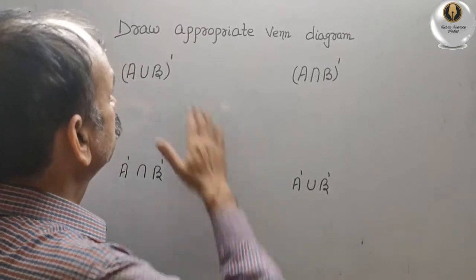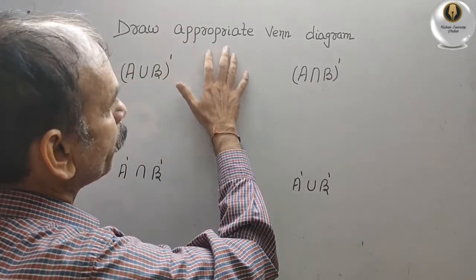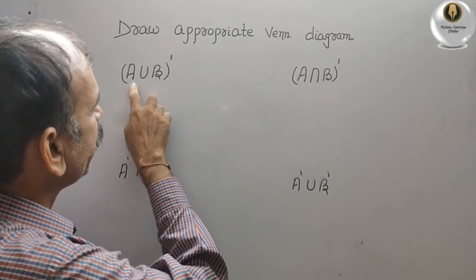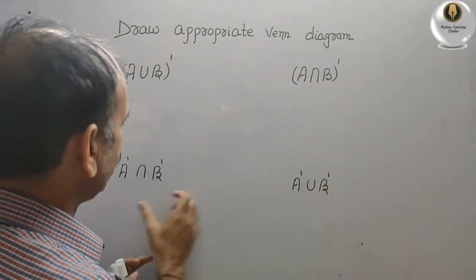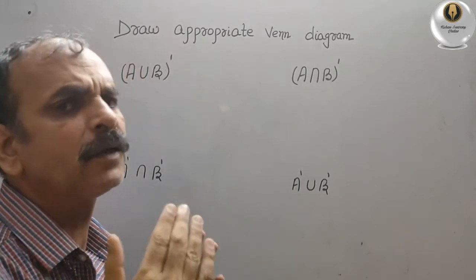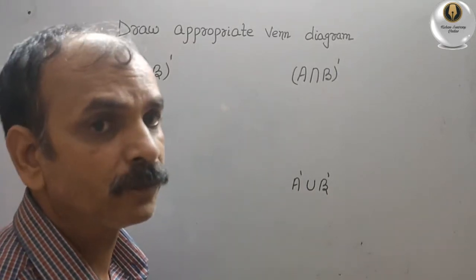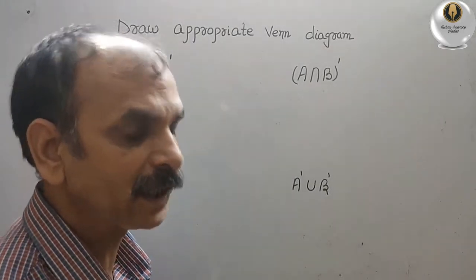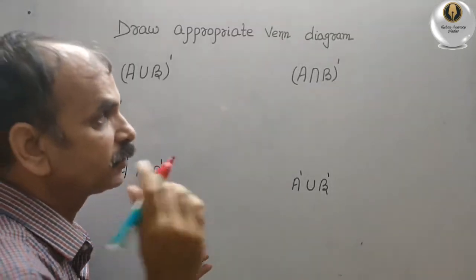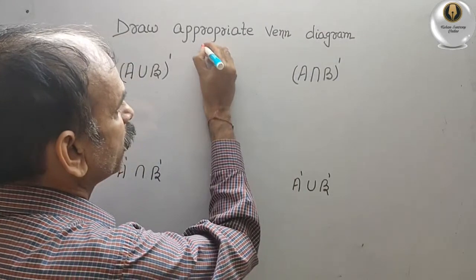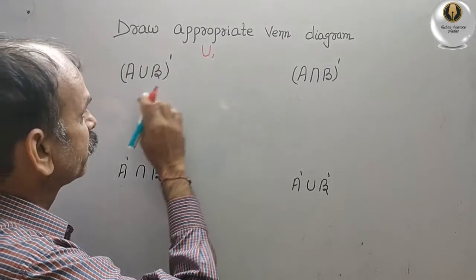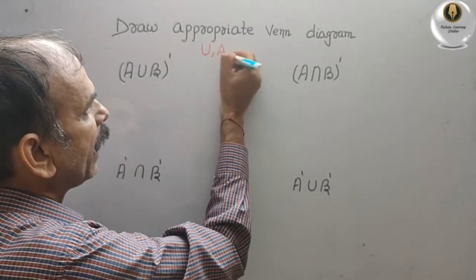Your question is to draw a probability diagram. They have given you A and B everywhere, which means we have to take one set as common, or you can say it is a universal set. So here we will always take three things: first is U, that is your universal set, then A and then B.